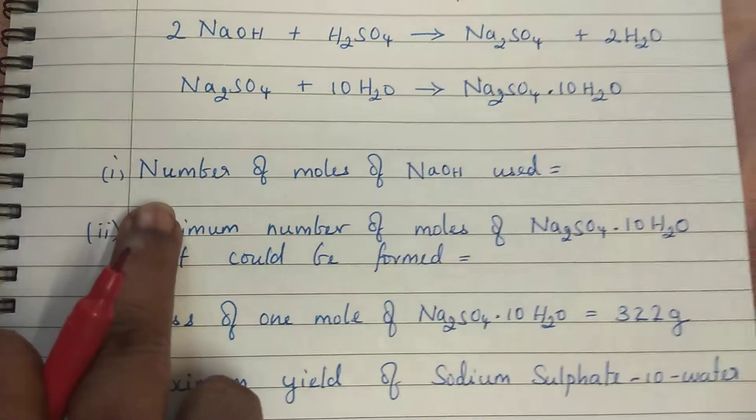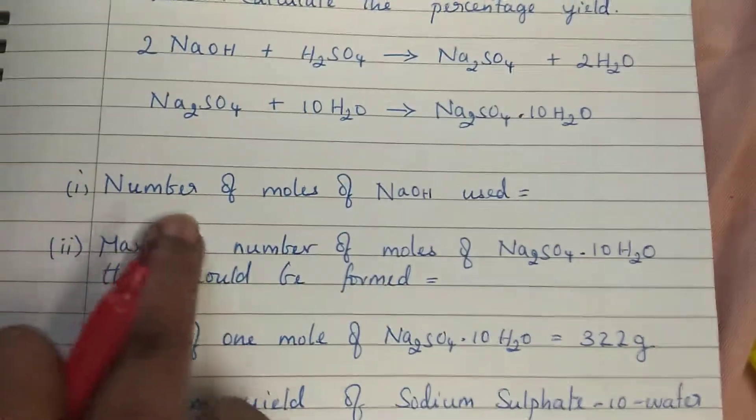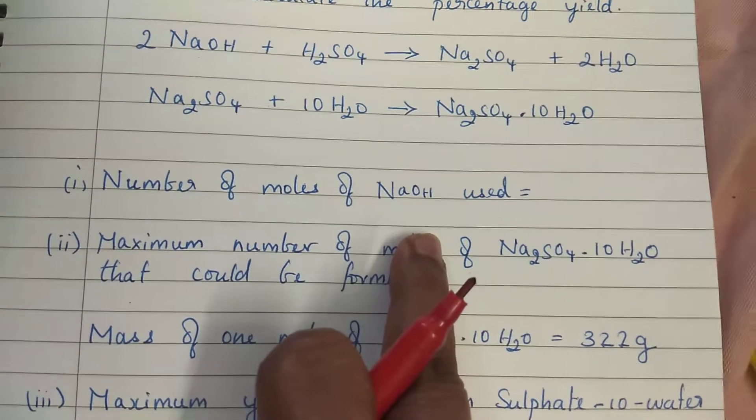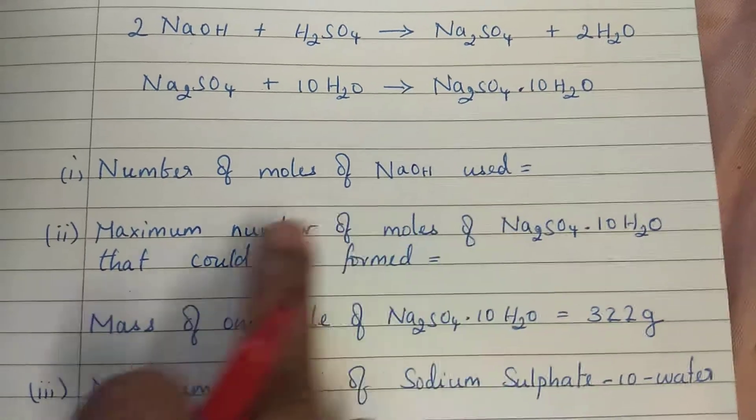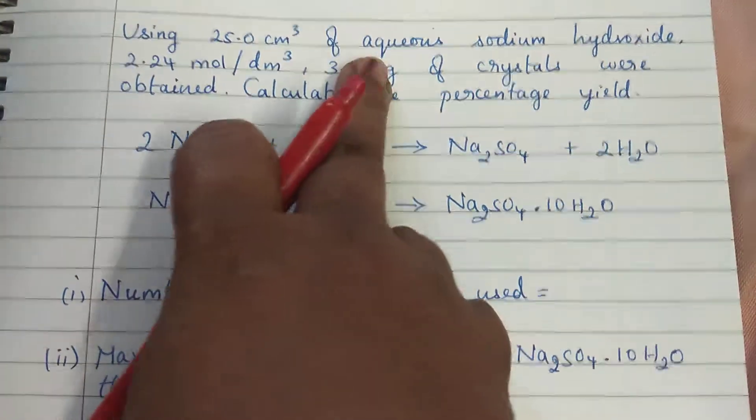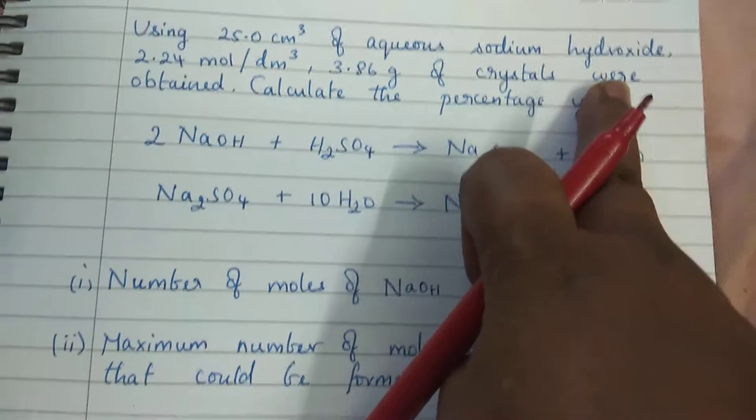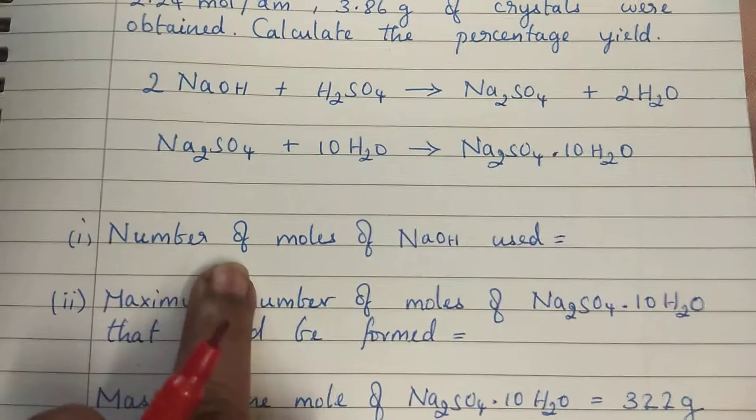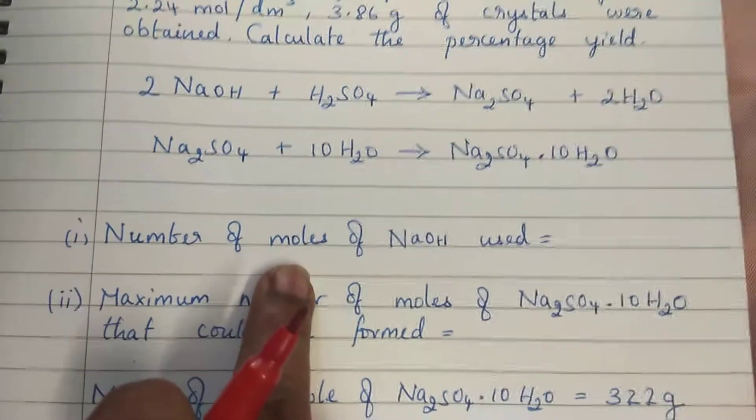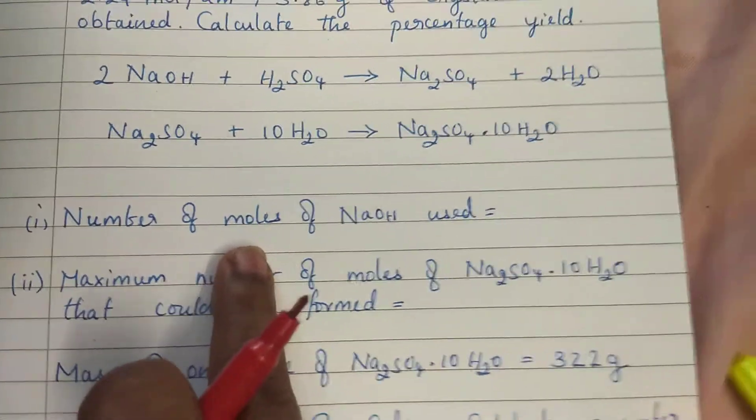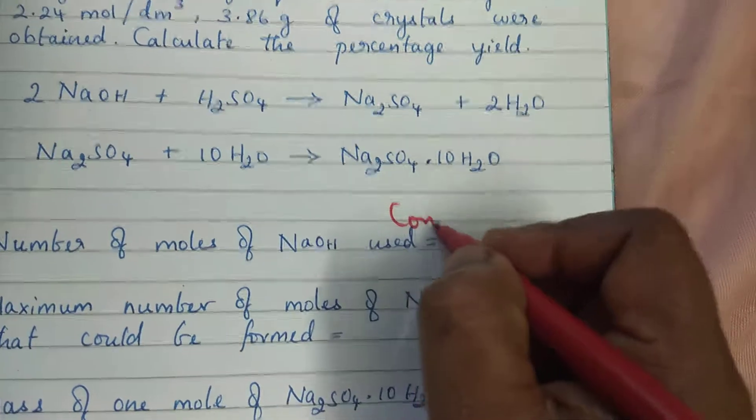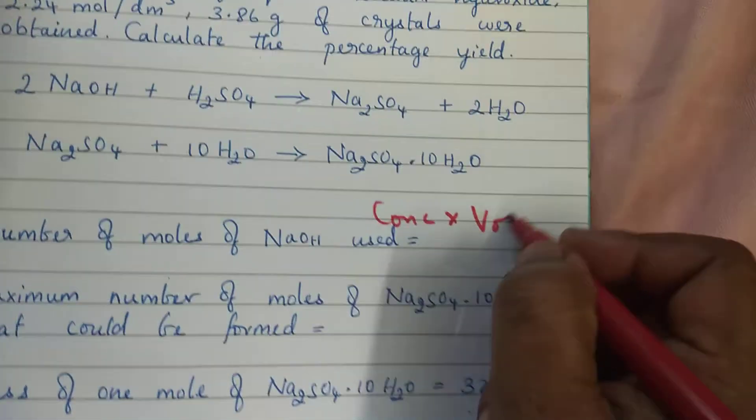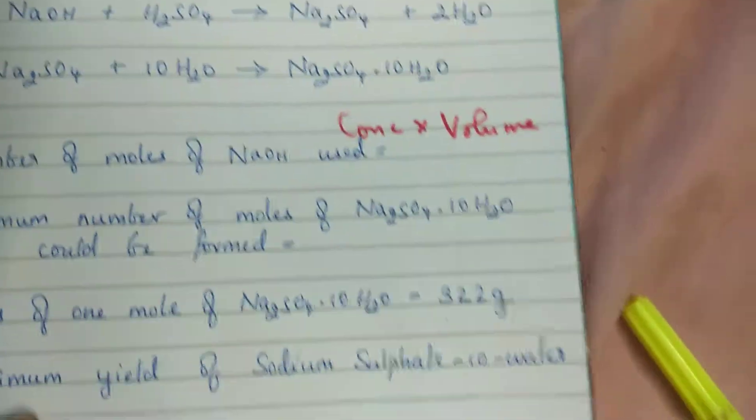You need to find the number of moles of NaOH used. Over here they have mentioned aqueous sodium hydroxide. What is the formula for the liquid to find the moles? It's concentration into volume.